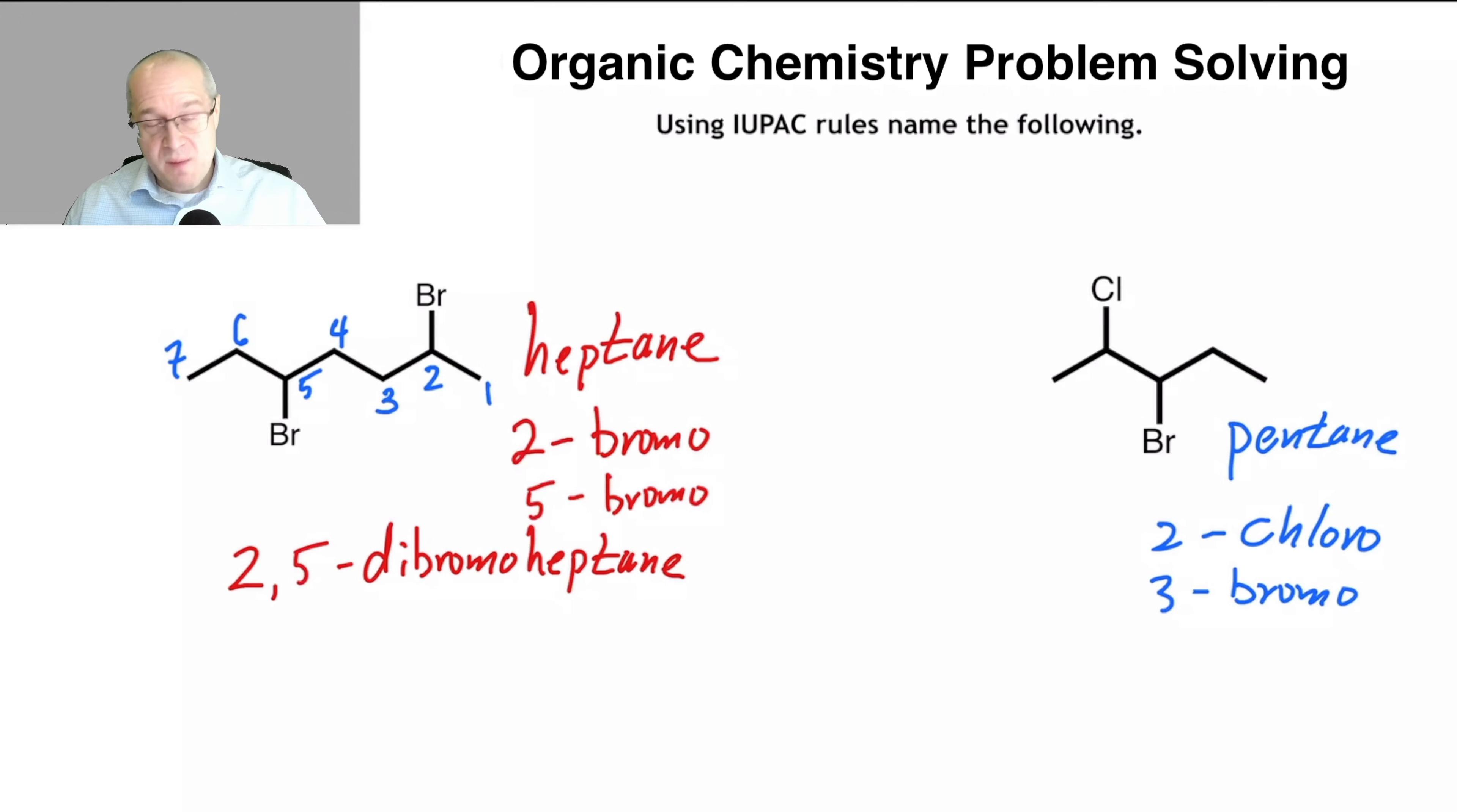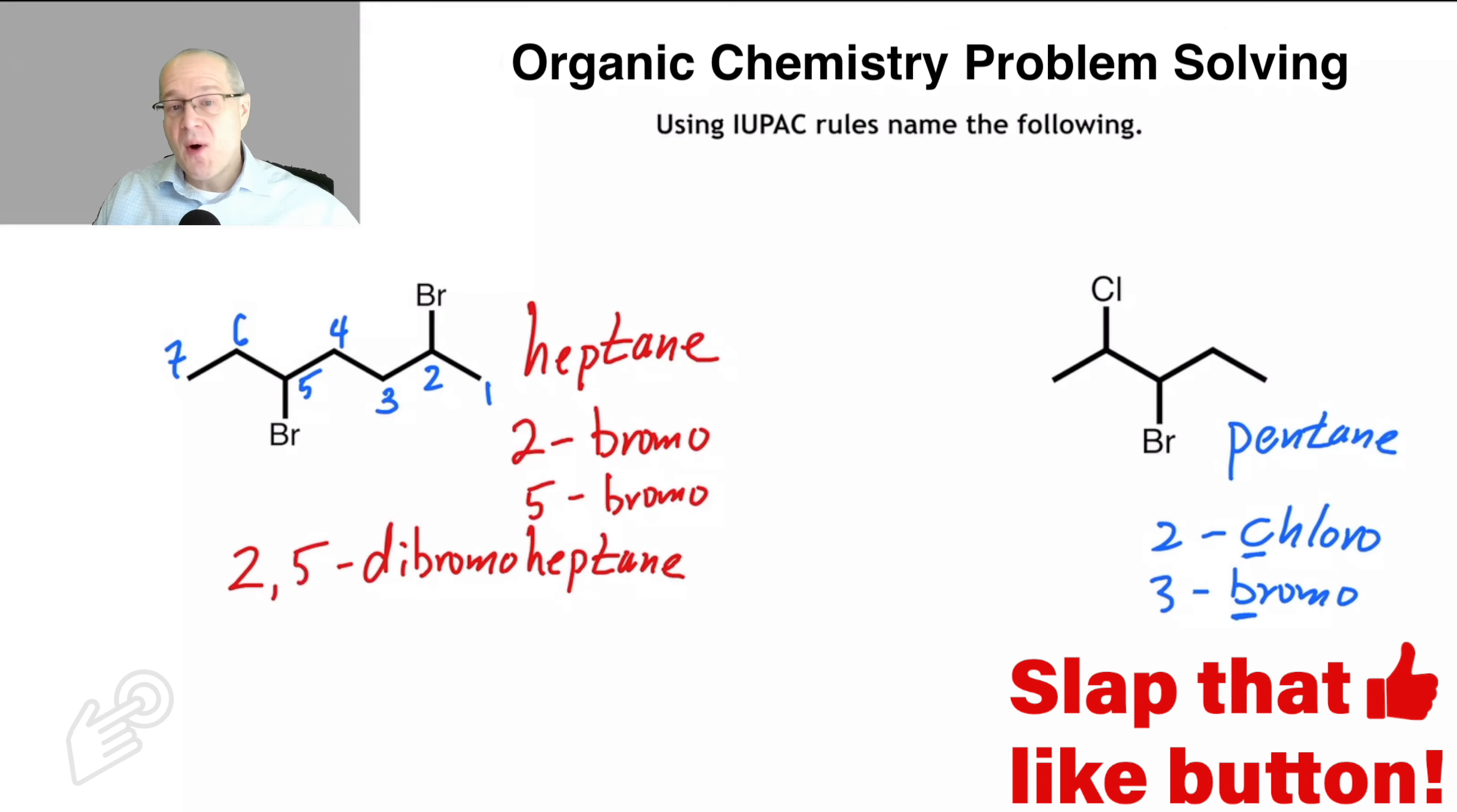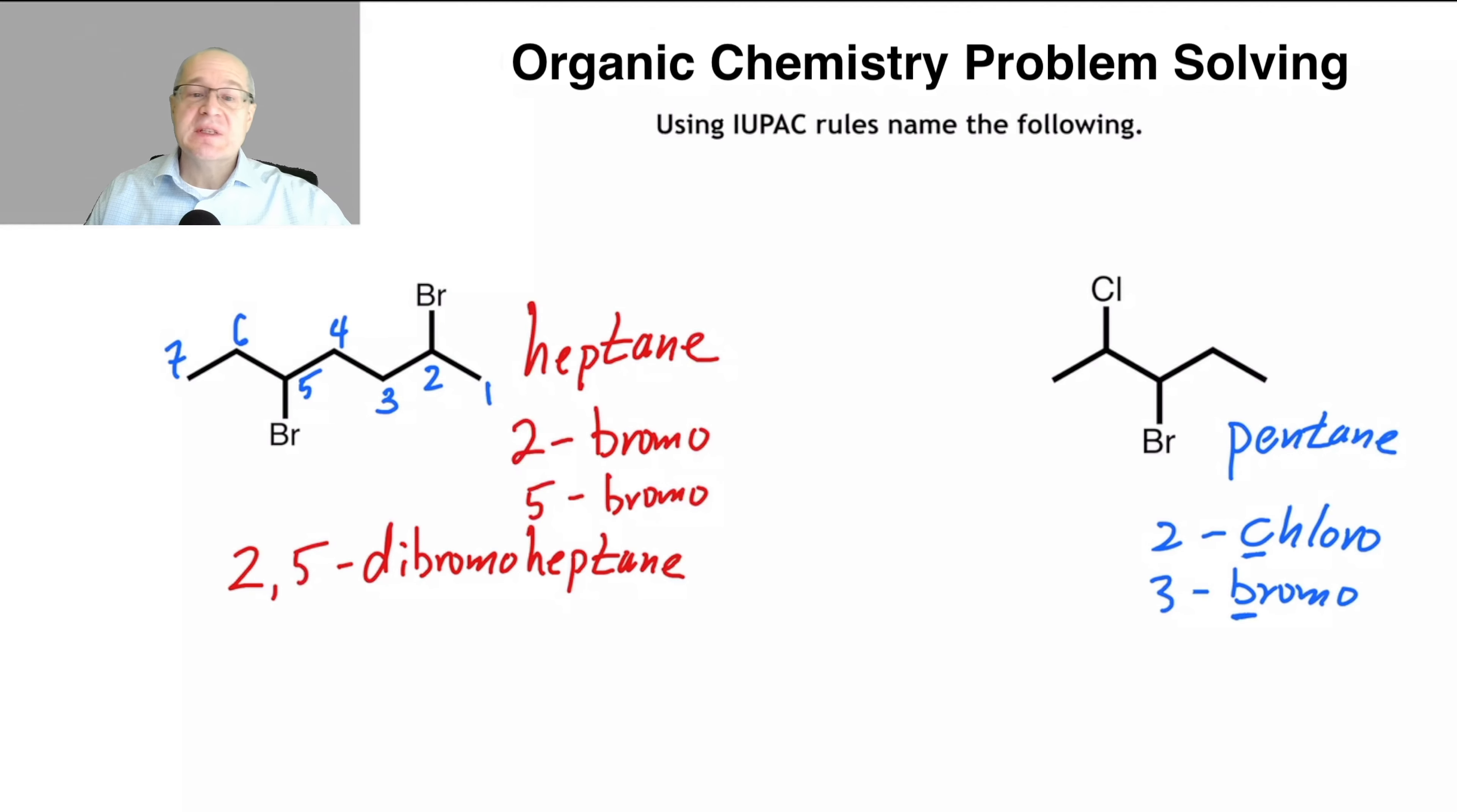Now when you're putting this together, remember it's alphabetical. So bromo has to come first, chloro has to come second because B comes before C in the alphabet. It doesn't matter that two is less than three. That's irrelevant. Three-bromo-two-chloropentane. And that's how you would do example two.